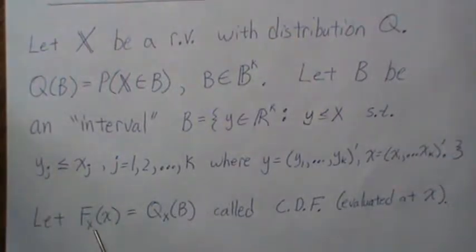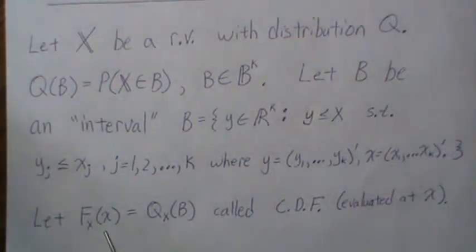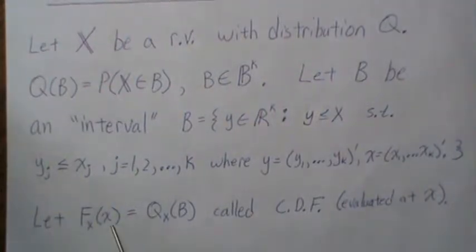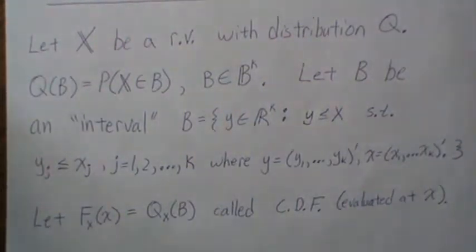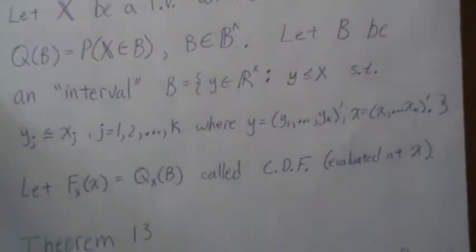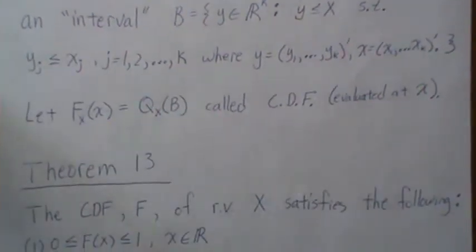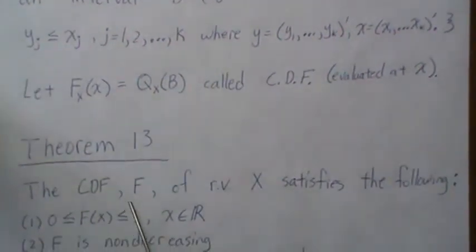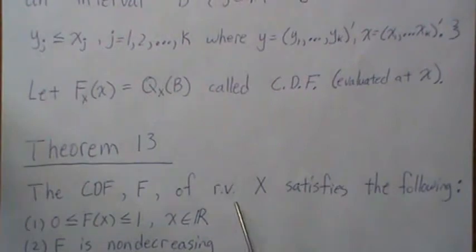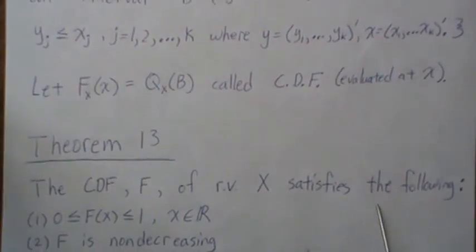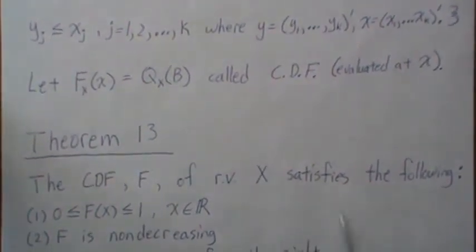This is what's called the CDF function, evaluated at x. And that's what we're going to study. Theorem one: the CDF F of a random vector x satisfies the following properties.